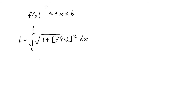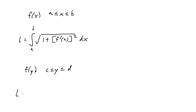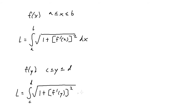Now if instead of a function in terms of x and x bounds, you're given a function in terms of y with y bounds ranging from c to d, all you have to do is change the variable. The formula becomes the integral from c to d of the square root of 1 plus f prime of y squared, times dy.